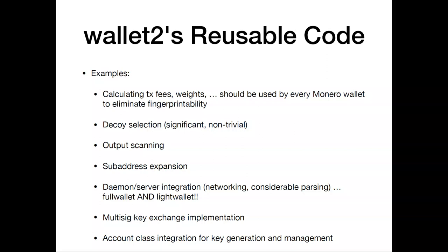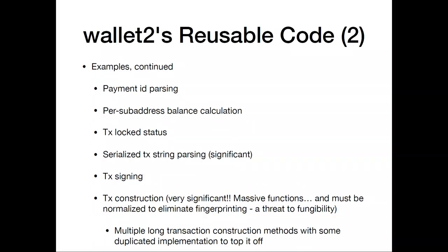For the same reason, there's code in wallet2 that everyone wants to use but can't without implementing all of wallet2: decoy selection, like actual output selection for constructing rings; output scanning — scanning the blockchain with your view key; sub-address expansion; daemon and server integration; multi-sig key exchange implementation; account class integration for key generation and management; payment ID parsing and construction; per sub-address balance calculation; transaction status; passing serialized transaction strings; signing transactions; and constructing transactions. If you ever want to go crazy, take a look at create_transaction2 in wallet2 — it's literally the longest function I've ever seen. If people construct transactions in different ways, they can be fingerprinted by how they construct them. This is actually a fungibility threat to Monero itself.